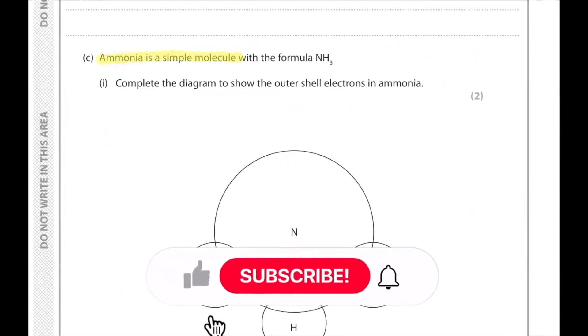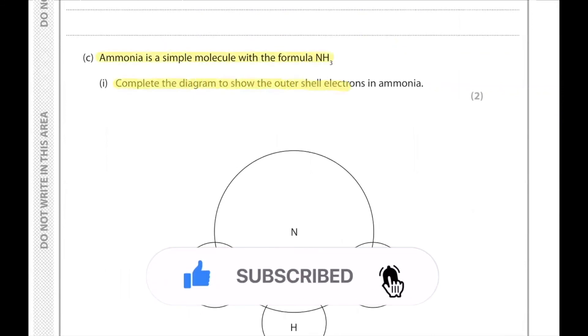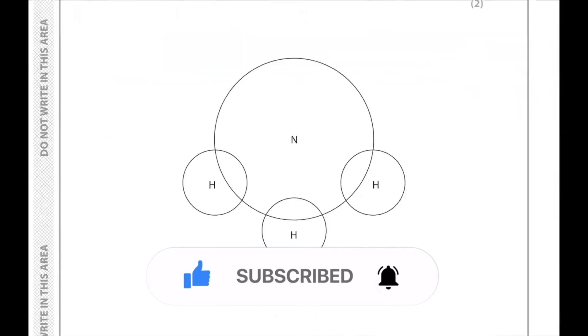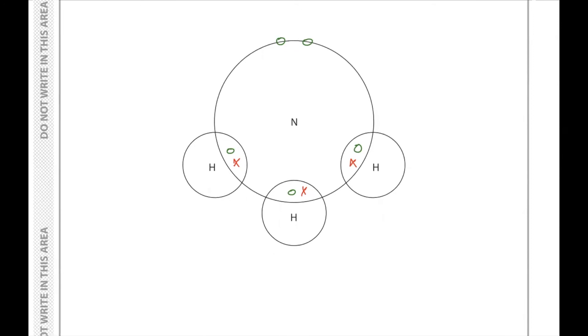Part 3. Ammonia is a simple molecule with the formula NH3. Complete the diagram to show the outer shell electrons in ammonia. In ammonia we have nitrogen, which has five electrons in its outer shell. We represent this with five dots and the hydrogen with five crosses. Each hydrogen is represented with a cross, each hydrogen has one electron, so three crosses.